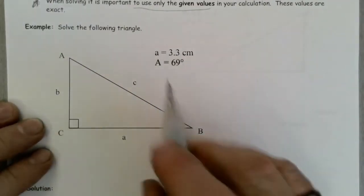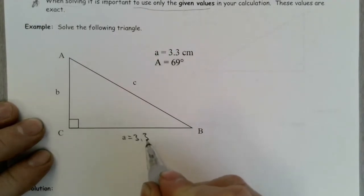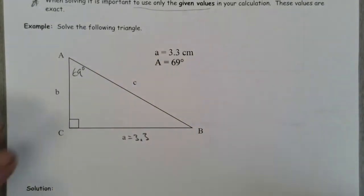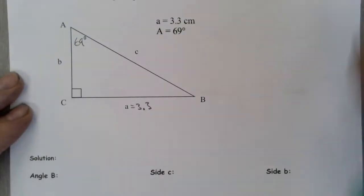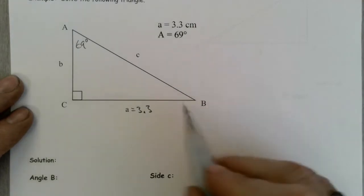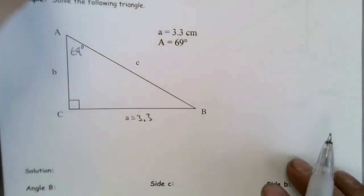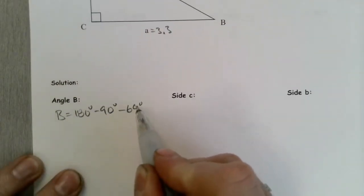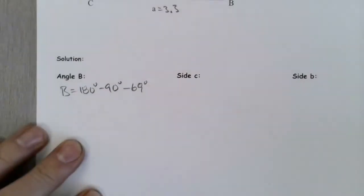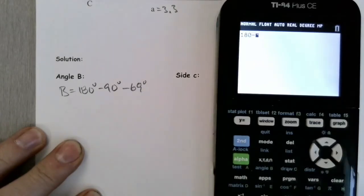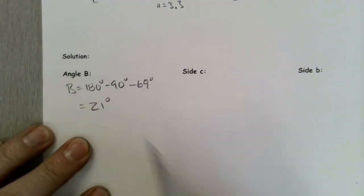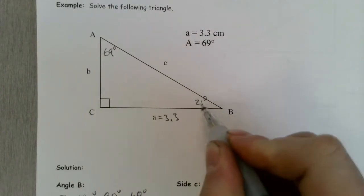We want to solve this triangle. We're told that side a is 3.3 and angle A is 69 degrees. A good place to start is finding angle B right away, because we know the angles add up to 180 degrees. So B equals 180 minus 90 minus 69 degrees, which equals 21 degrees. We know angle B is 21 degrees — we won't use that in calculations, but it's good to know.